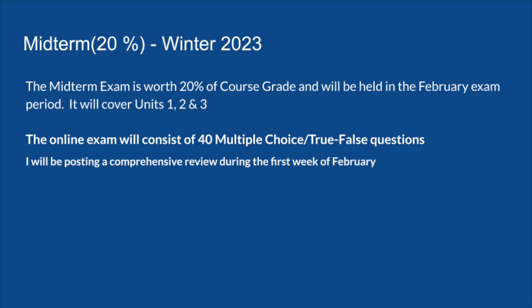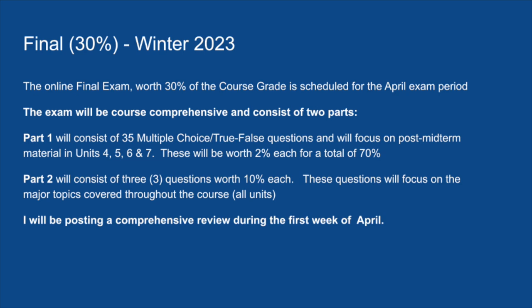The midterm for the course will cover units one, two, and three, and will be 40 multiple choice and true-false questions. It's worth 20% of the course grade and will be written in February during the midterm exam period. The final exam, written at the end of the course in April, will be worth 30% of the course grade and will have 35 multiple choice questions and three written questions — a 70-30 split.